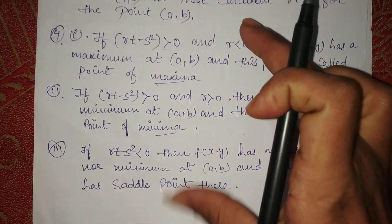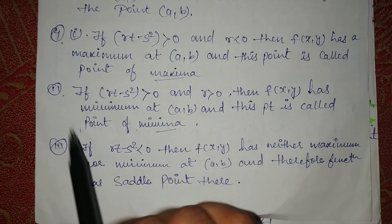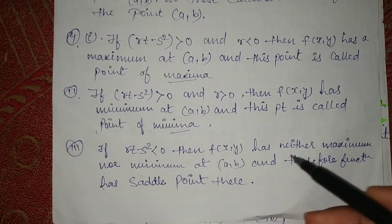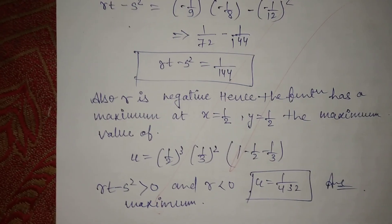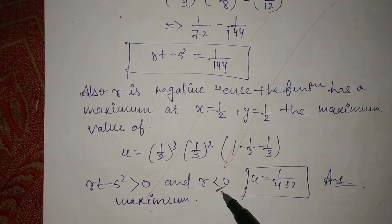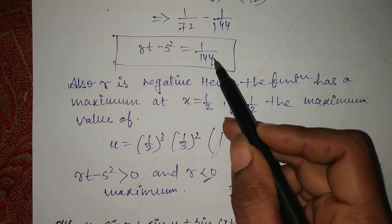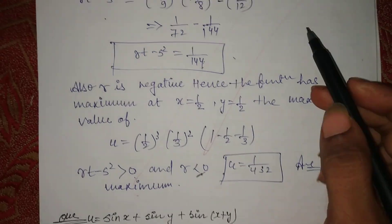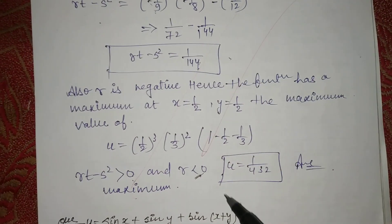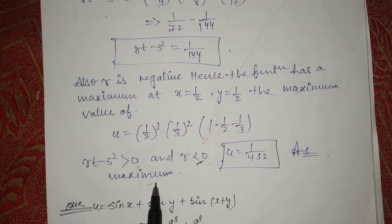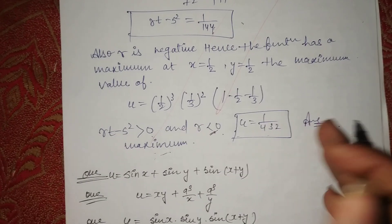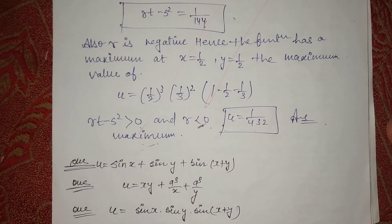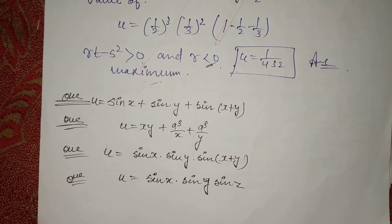Now we check the last conditions. Since rt minus s² = 1/144 which is greater than zero, and r is negative (r = -1/9, so r < 0), the maxima condition is fulfilled. Therefore this is a maxima, and the value of u at that point equals 1/(3·4·3). These are your practice questions — please solve them.